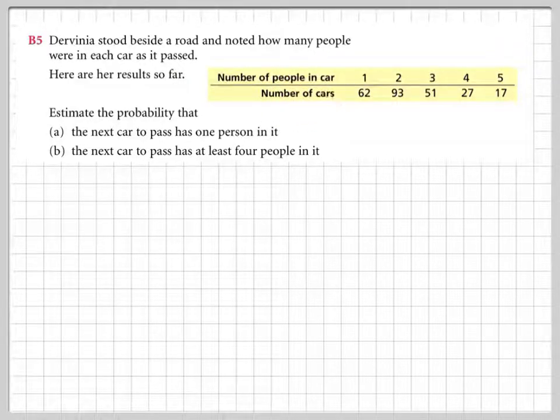So we have the number of people in a car, and we're going from one person, two people, three people, four people, five people, and the number of cars. For example, there were 51 cars that had three people in it.